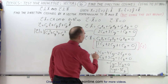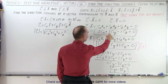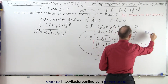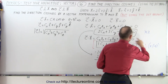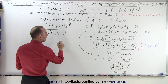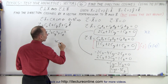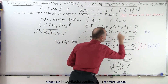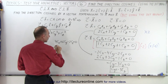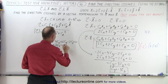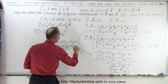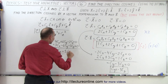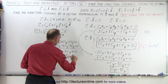I can do that again by multiplying the first equation times 2 and the second times negative 3. That gives 4 C sub X plus 6 C sub Y minus 2 C sub Z equals zero, and negative 3 C sub X minus 6 C sub Y minus 3 C sub Z equals zero. When I add the two together, the C sub Y's drop out. I get C sub X minus 5 C sub Z equals zero, or C sub X equals 5 C sub Z.